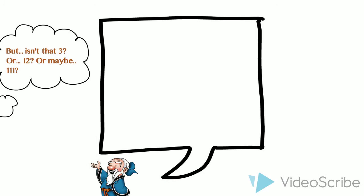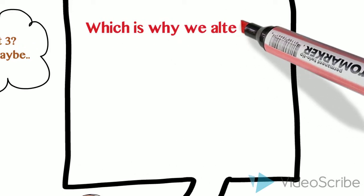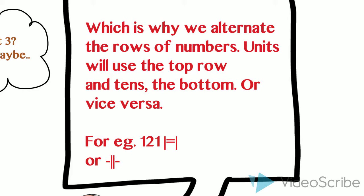It can be confusing which is why we alternate the numbers. Units will use the top row and tens the bottom, or vice versa. For example, 121.